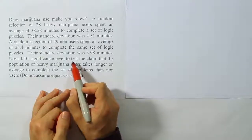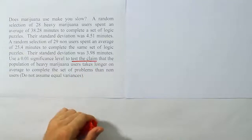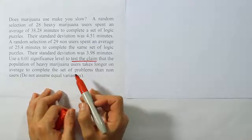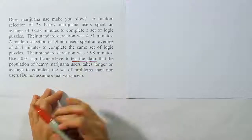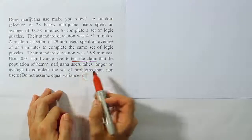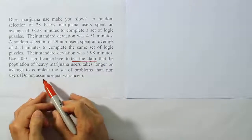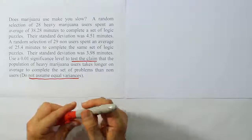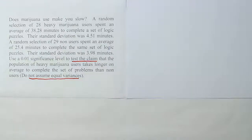Let's identify the phrase 'test the claim' in the problem. When you see that phrase, you know you're dealing with a hypothesis test. We're doing a hypothesis test to compare the population of heavy marijuana users against the non-user population, and we're saying that they take longer on average. They also tell us do not assume equal variances — that's important. We need to use that when we calculate our degrees of freedom.